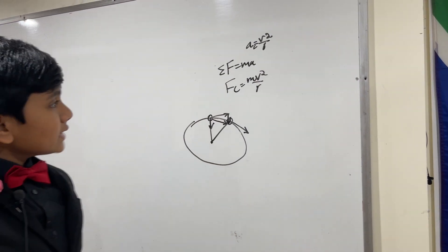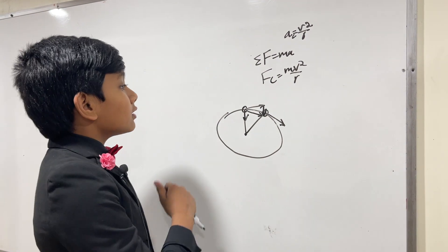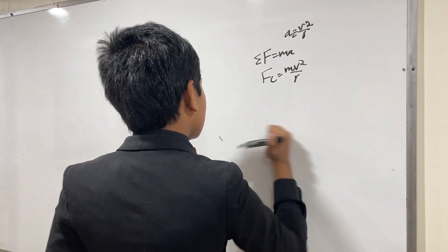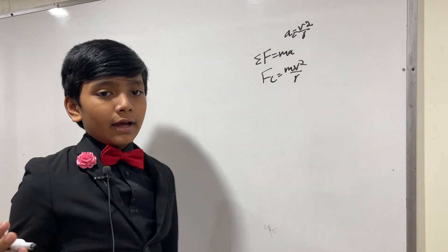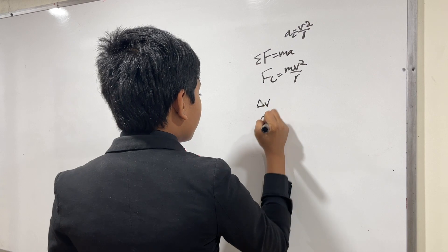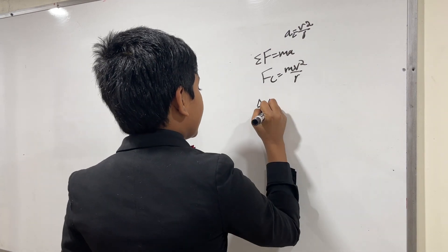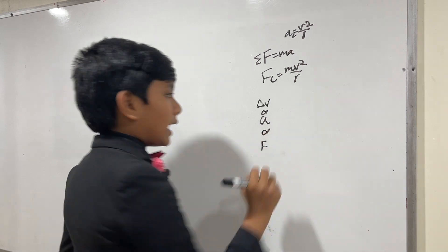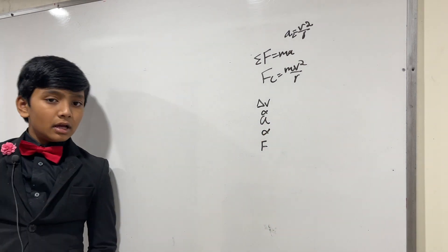So now, let's get started. And just to note, if delta v points in one direction, then a will point in the same direction, because a is proportional to delta v. For the same reason, if a points in one direction, f will point in the same direction.